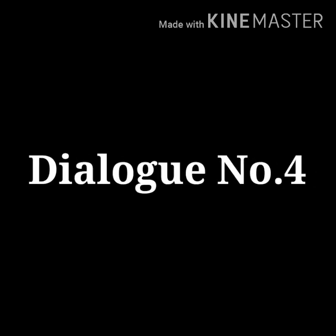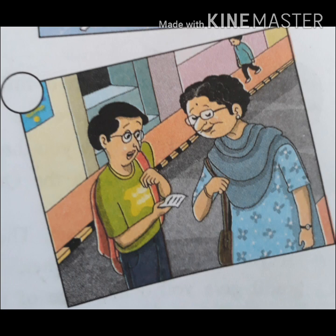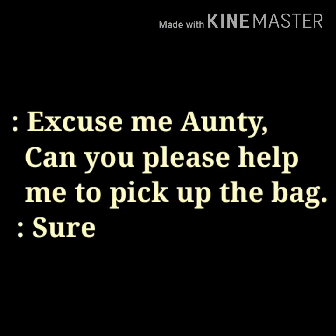Dialogue number four: 'Excuse me, Auntie. Can you please help me find this address?' 'Sure.' In this dialogue, a person is asking for help to find a place. This picture is suitable and the proper number is 4. Now use your own words: 'Excuse me, Auntie. Can you please help me to pick up the bag?' 'Sure.'